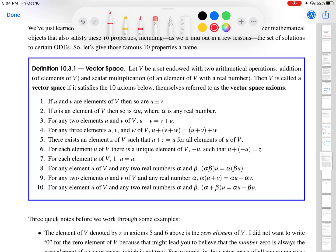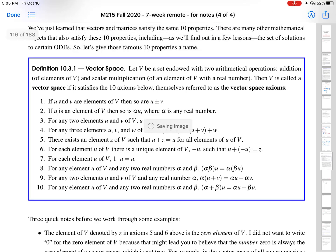Axiom five, this is the part that usually fails for many of these spaces that are not a vector space. There exists an element Z of V such that U plus Z equals U. This is the zero element. So axiom five is the zero element axiom. Many spaces that are not vector spaces do not have a zero element.